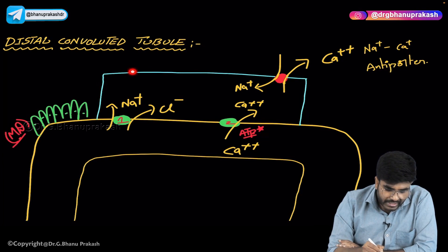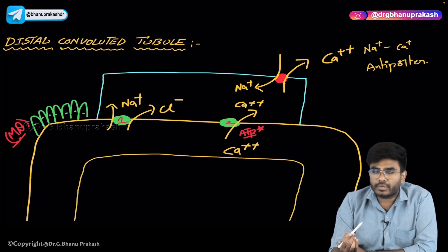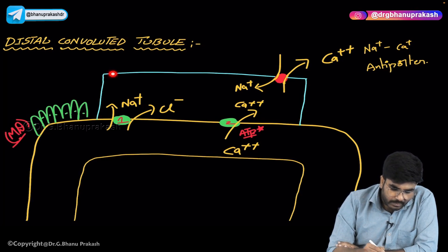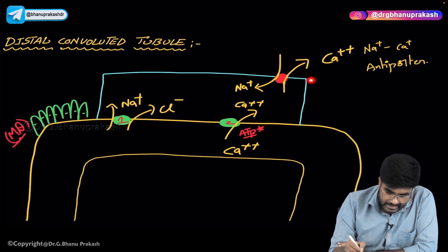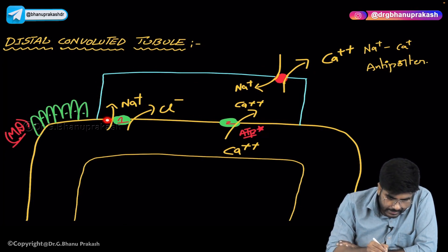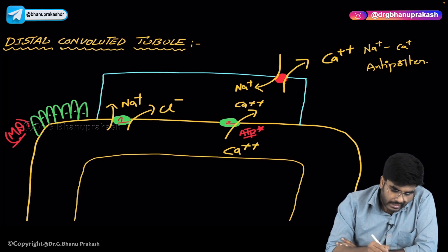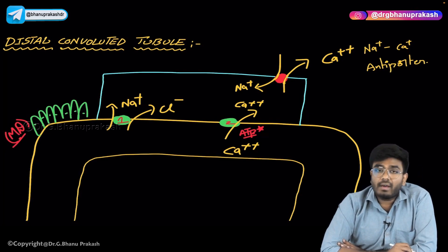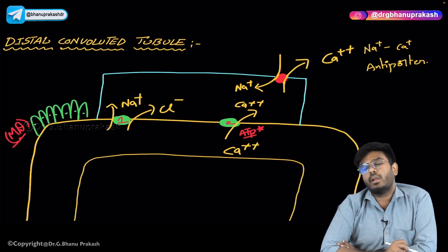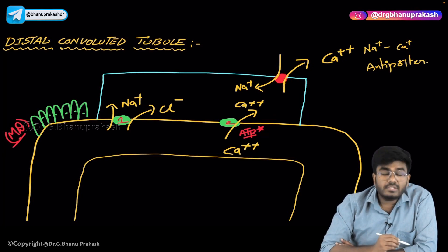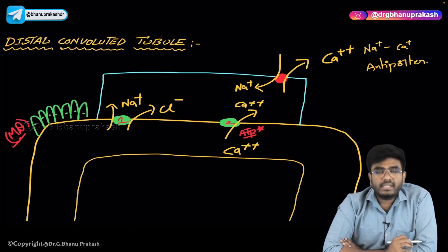After this, you can appreciate the blue color cell present on the distal convoluted tubule — this is the epithelial cell of the DCT. This side of the epithelial cell is the basolateral side, the basolateral membrane. The yellow color side is the luminal side. There are two transporters on the luminal membrane and one transporter on the basolateral membrane, and we'll discuss their functions.